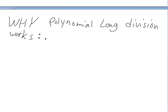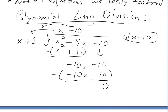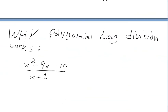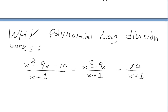So why does polynomial long division work? To show that, we write the same expression as a rational function: x squared minus 9x minus 10, divided by x plus 1. We separate this function so that it equals x times x plus 1, minus 10 times x plus 1, all divided by x plus 1. We multiply by x so we get the x squared term and match the order.